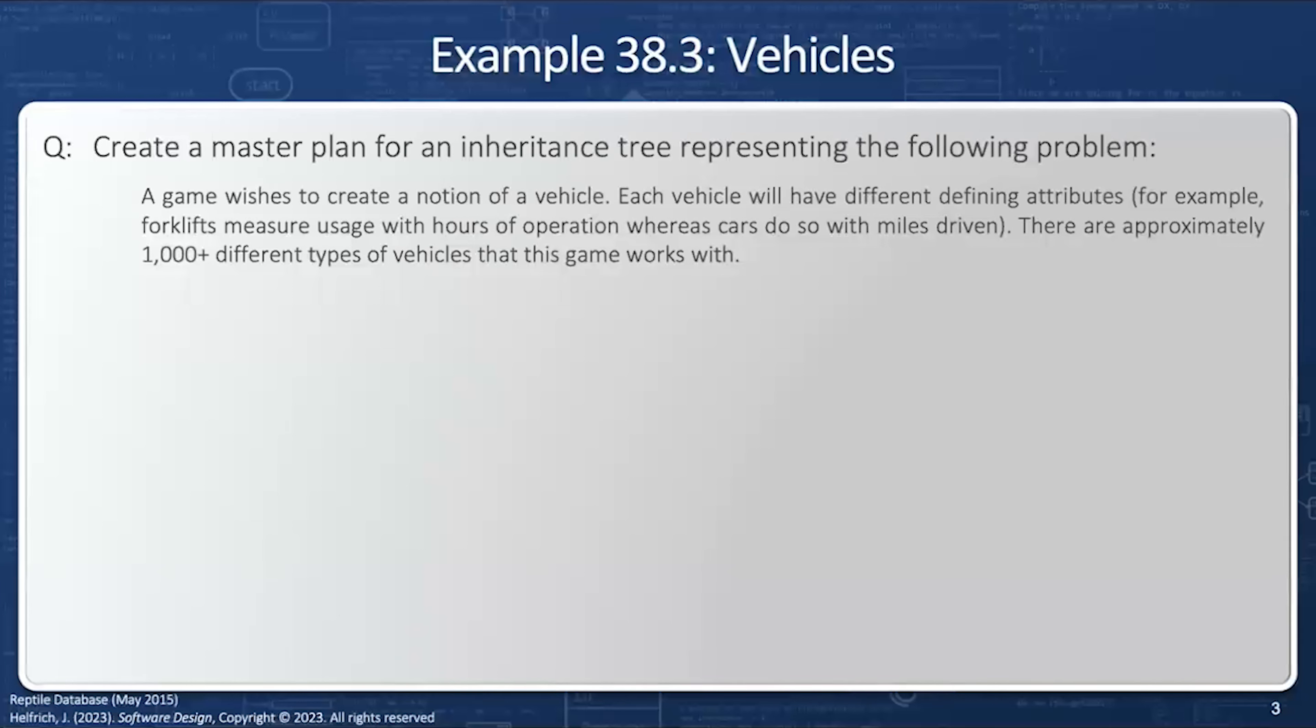So let's take a look at an example. A game wishes to create a notion of a vehicle. Each vehicle will have different defining attributes. For example, a forklift measures usage with hours of operation, whereas cars do so with miles. There are approximately a thousand plus different types of vehicles that this game will work with.